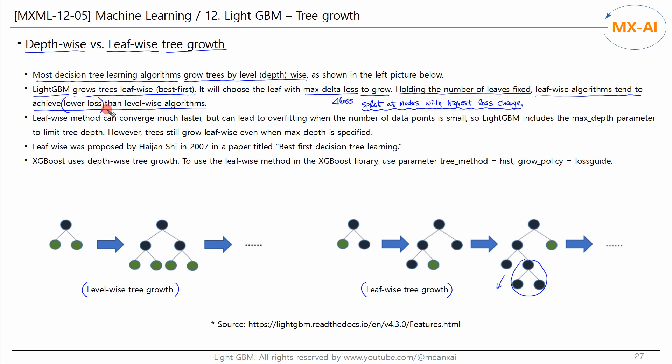Leaf-wise method can converge much faster, but can lead to overfitting when the number of data points is small. So light GBM includes the max depth parameter to limit tree depth. However, trees still grow leaf-wise even when max depth is specified.